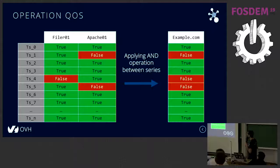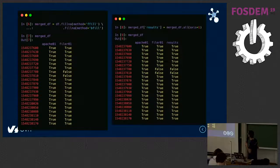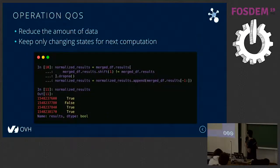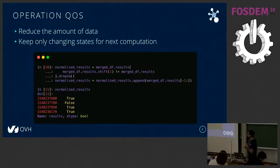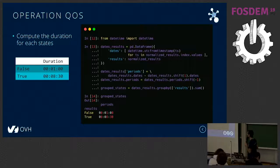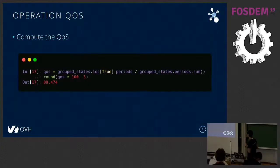Once we have no more gaps, we apply the AND operation between the columns and get the result for example.com. In Pandas, we have a data frame with full rows and no gaps, then apply the AND operation. We then keep only the changing state to reduce the amount of data for next computation. We apply a group-by operation and a sum to get the duration for both false and true states. With the true period and the total of periods, we can compute the actual QoS.